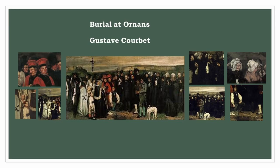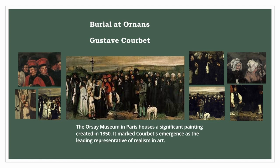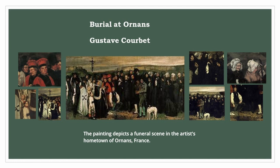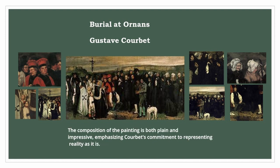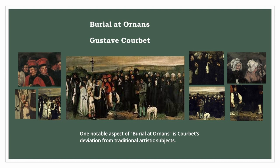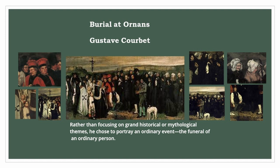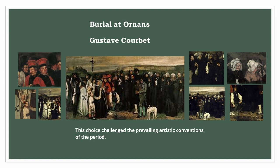Burial at Ornans, housed in the Orsay Museum in Paris, was created in 1850 and marked Courbet's emergence as the leading representative of realism in art. The painting depicts a funeral scene in the artist's hometown of Ornans, France, portraying the burial ceremony of Courbet's great-uncle and capturing the solemnity and gravity of the occasion. The composition is both plain and impressive, emphasizing Courbet's commitment to representing reality as it is. Rather than focusing on grand historical or mythological themes, he chose to portray an ordinary event — the funeral of an ordinary person — challenging the prevailing artistic conventions of the period.